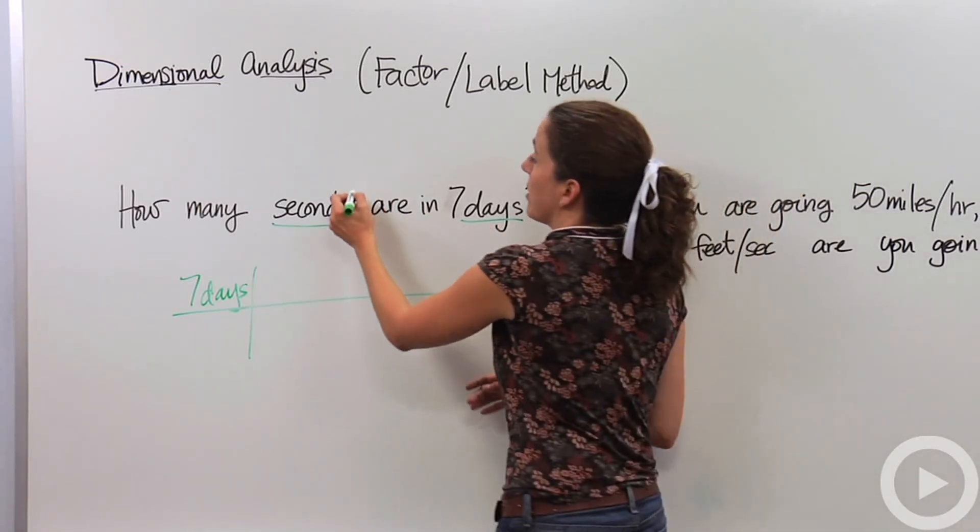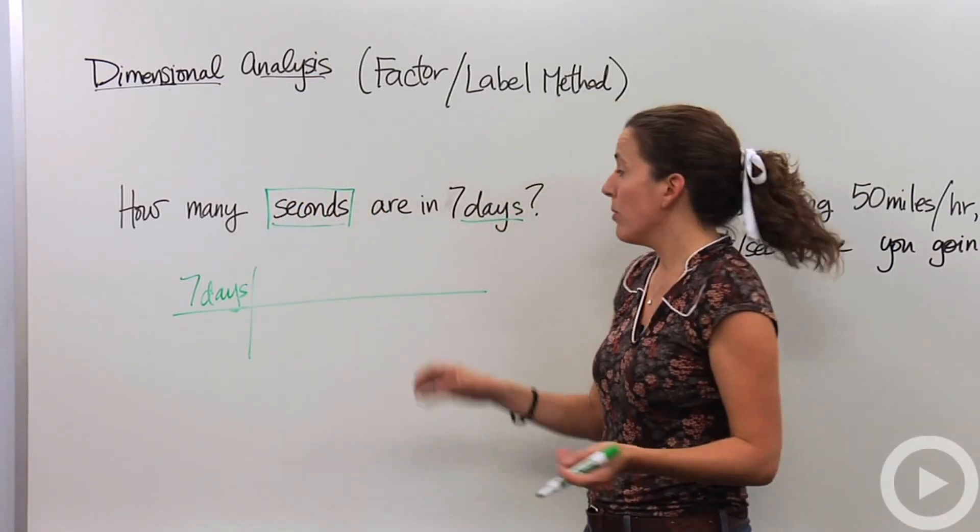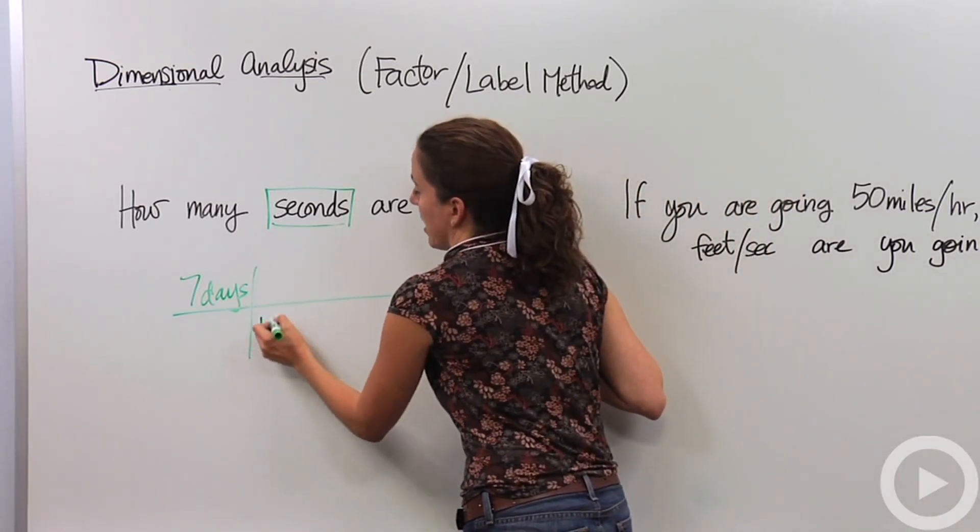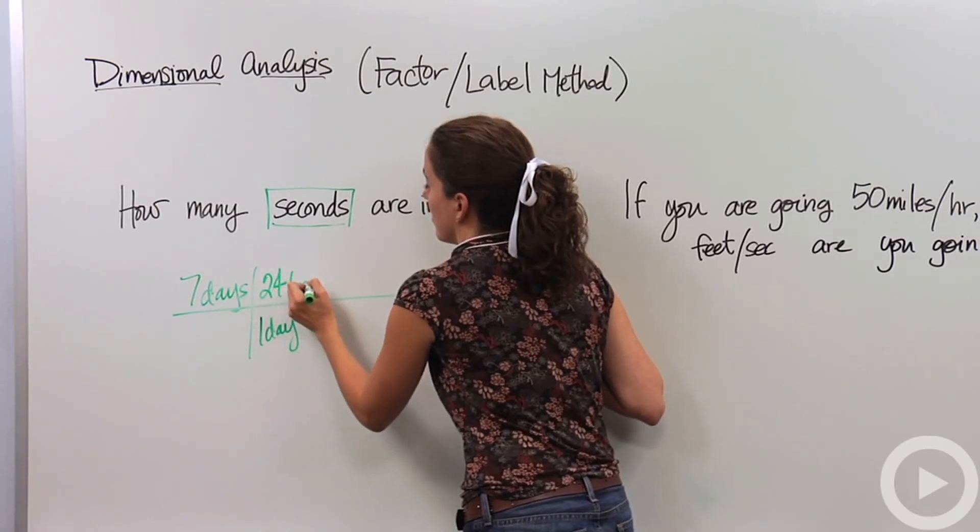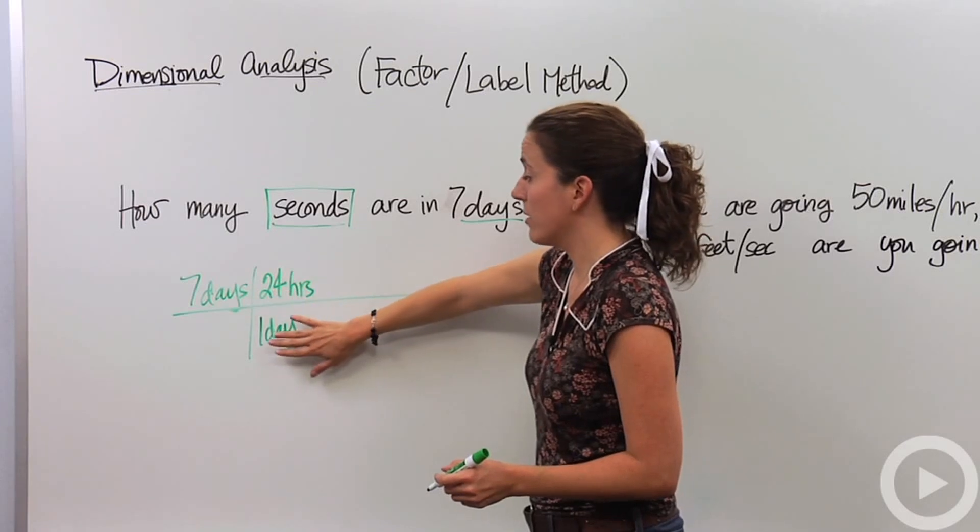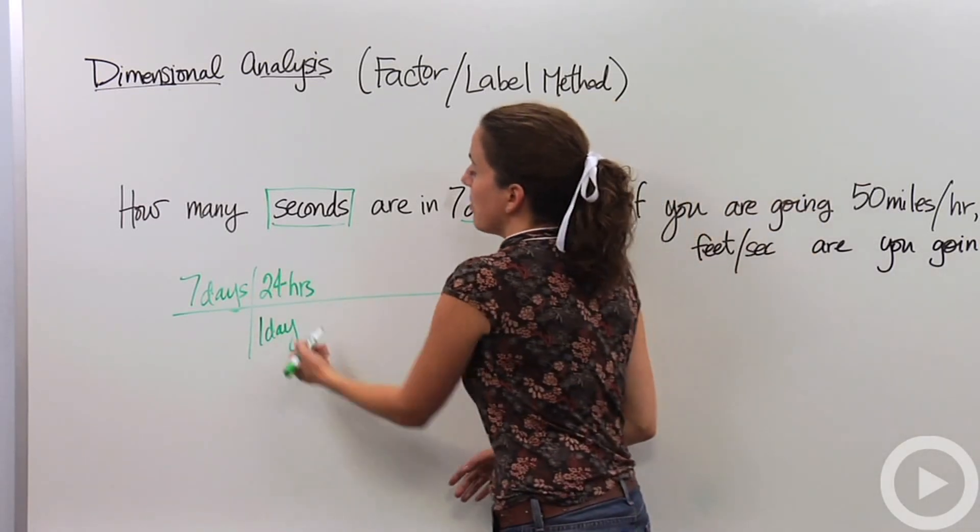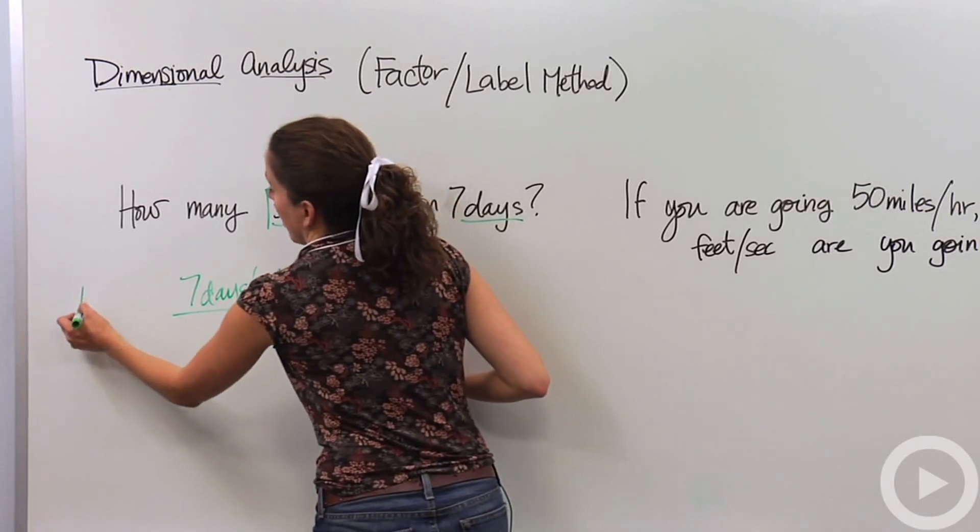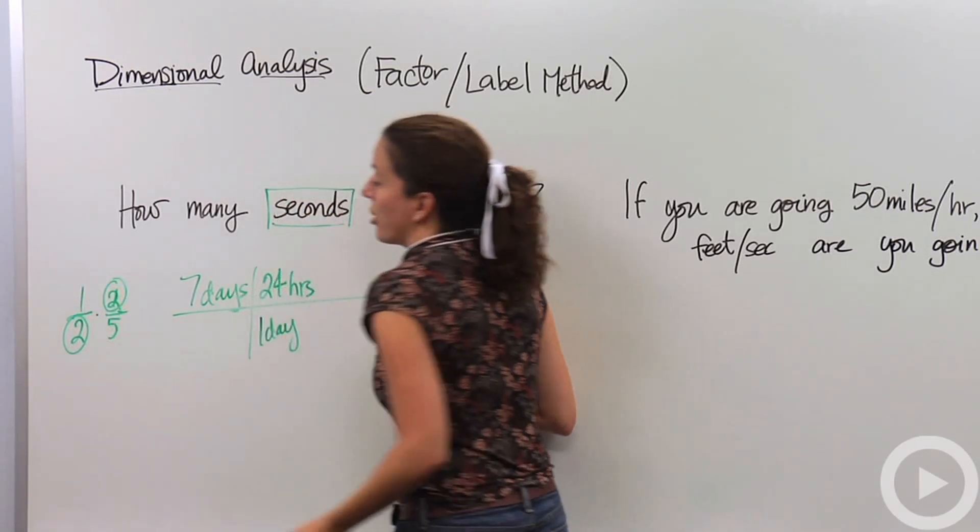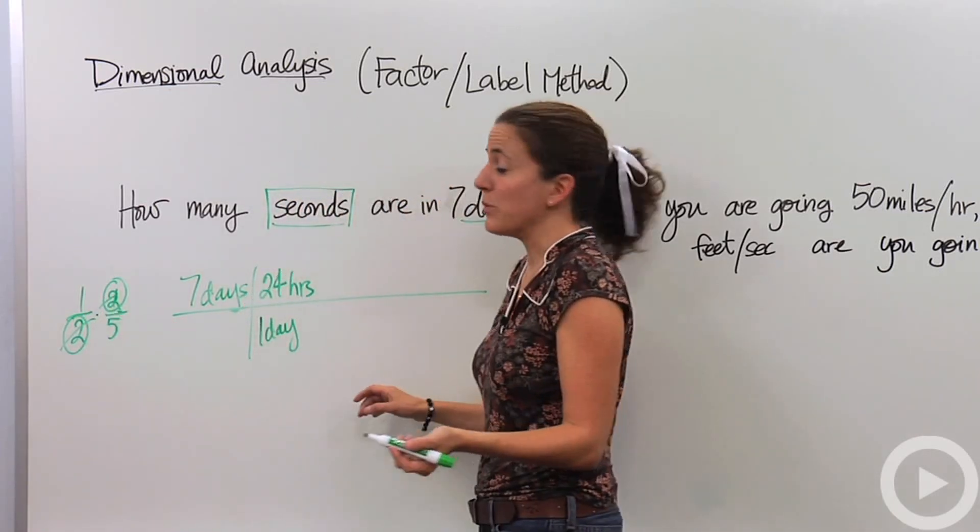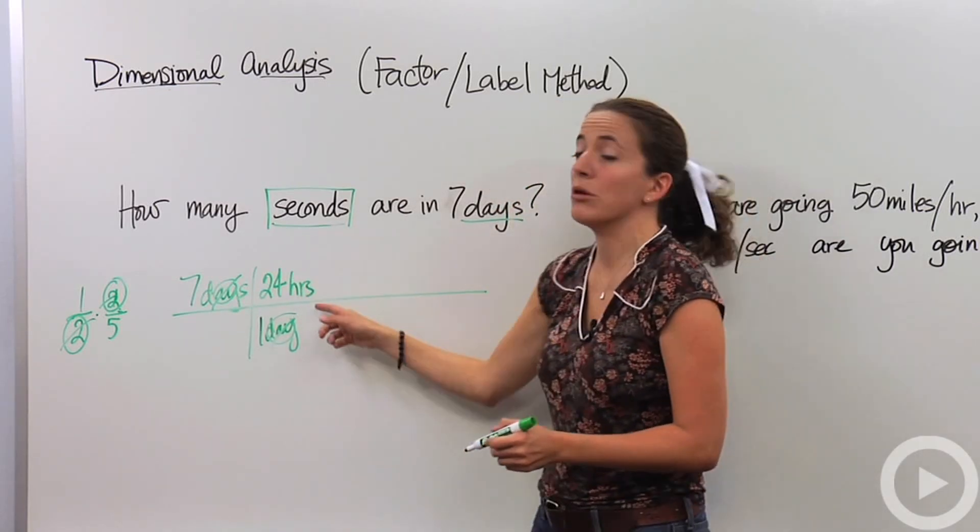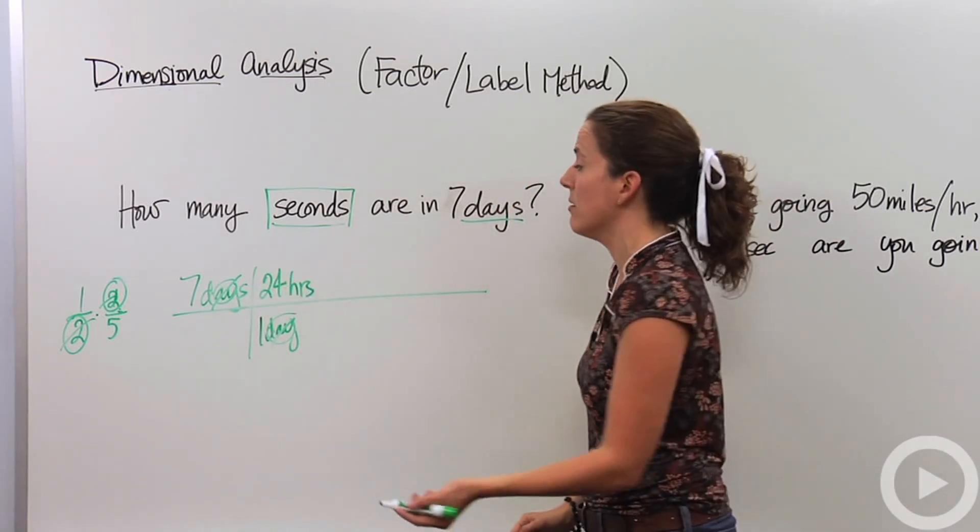So we're going from seven days and we want to end up in the unit of seconds. So the things I know that are about days is I know that in one day we have 24 hours. So one day, I'm going to put down here, and 24 hours up here. Now, the reason I put day on the bottom of this ratio, these are equal to each other. They're equal units. One day is equal to 24 hours. The reason I put a day on the bottom is because I can, just like I can cross out when I multiply one half and two fifths, I can cross out the numerator and the denominator, I can do that with units as well. So I can cross out day. And so now if I multiply these guys together, I'm actually now in the unit of hours. That's what makes this method so convenient.